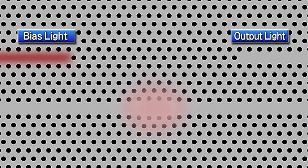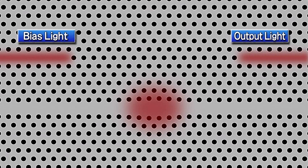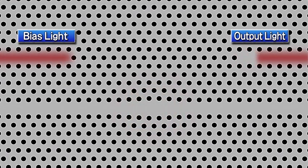If we call the state in which there is output light ON, and the state with no output OFF, this device can be used as an optical bit memory.